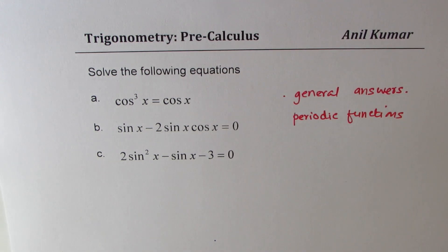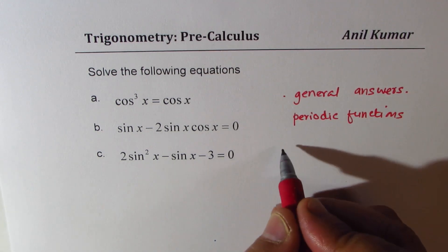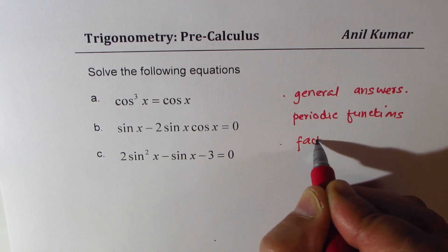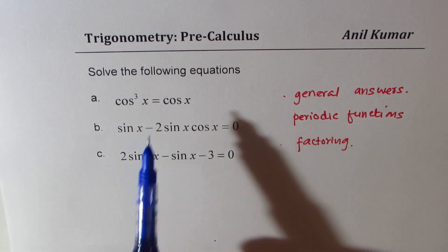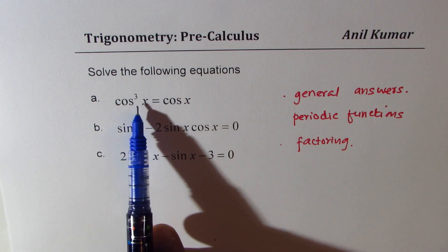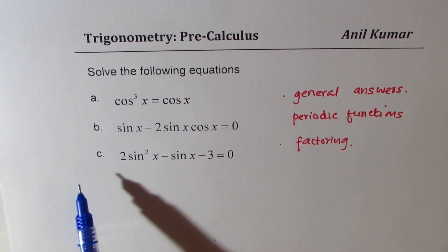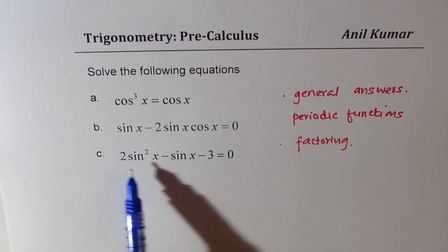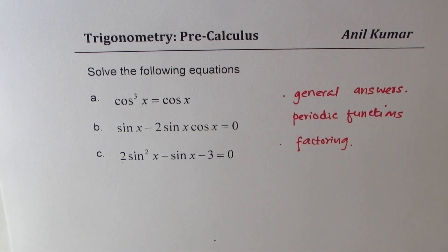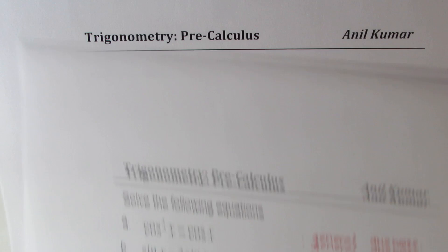The technique we are going to use is factoring. For the first equation, you bring the terms together, factor cos x, and then solve. For the second, you factor sin x. The third is a quadratic equation — product of minus 6 and sum of minus 1 will help you solve it. You may pause the video, copy these questions, solve them, and then check with my solution.